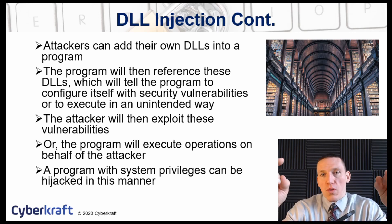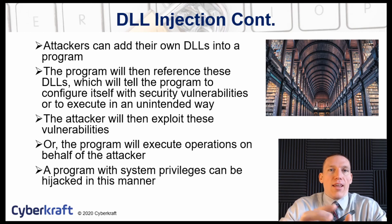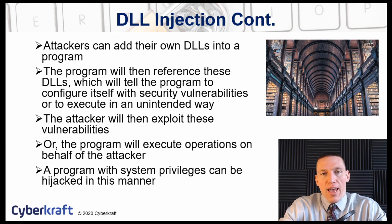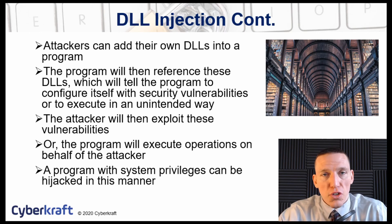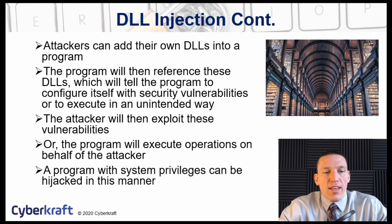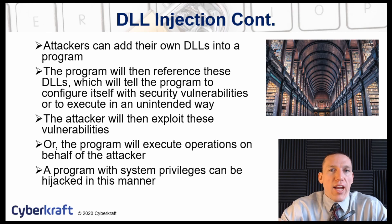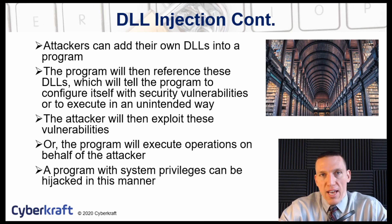To inject a malicious DLL, the attacker needs to dereference the original DLL and have the new one accepted as legitimate. This usually requires some other type of attack or network exploitation ahead of time. By doing this, an attacker can hijack another account using that software — perhaps assuming the identity of a different account or an administrator account — making DLL injection a method of privilege escalation.